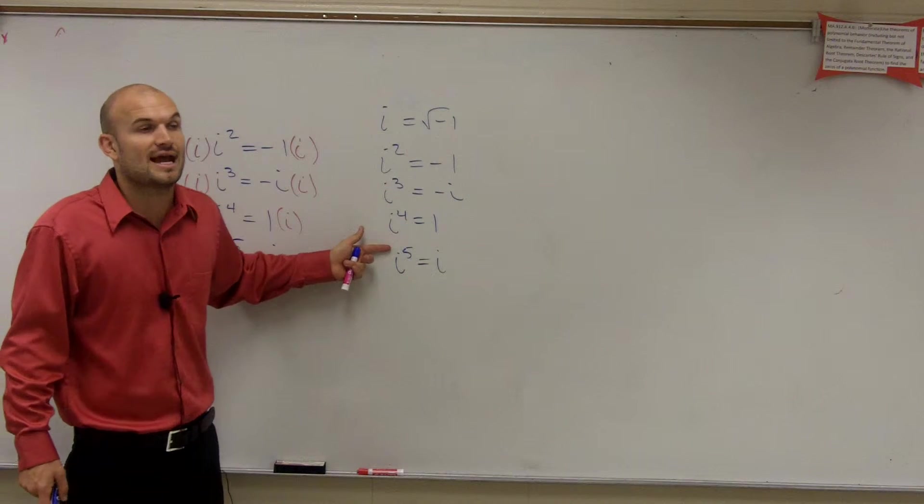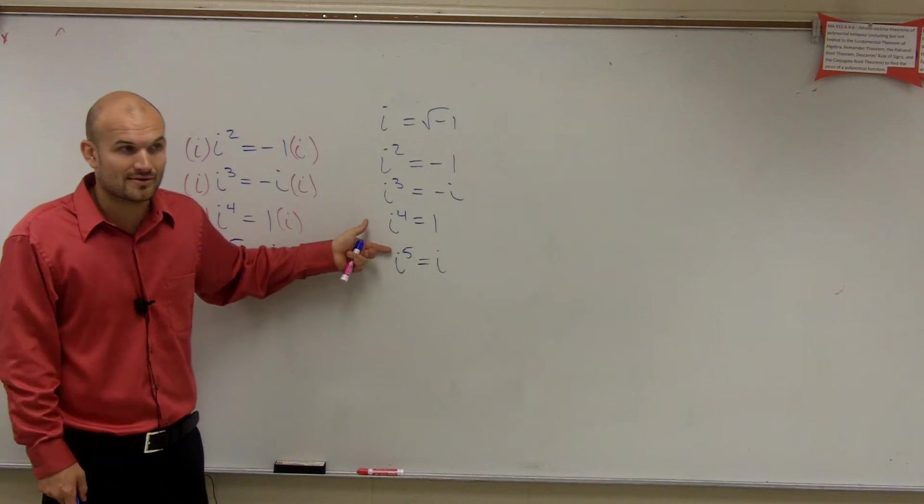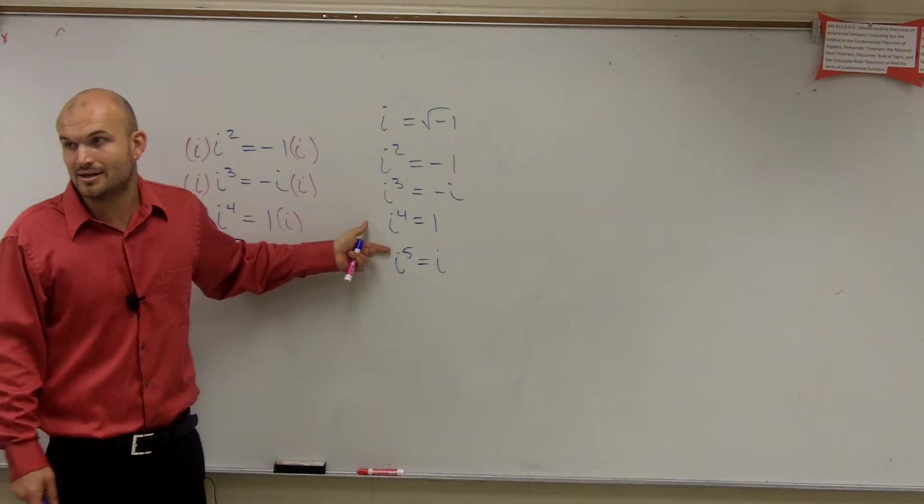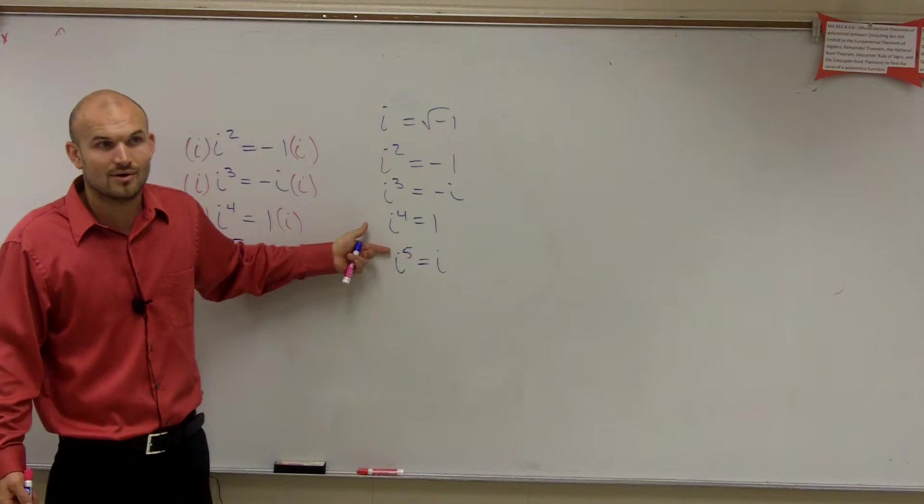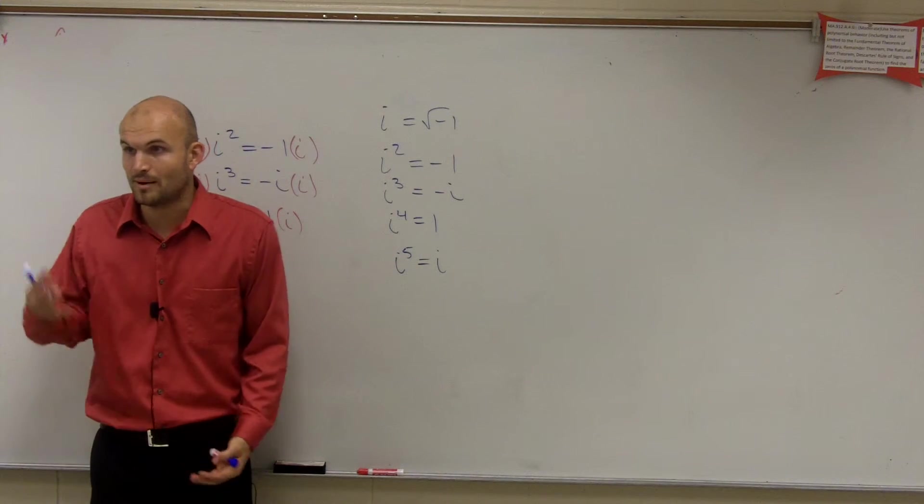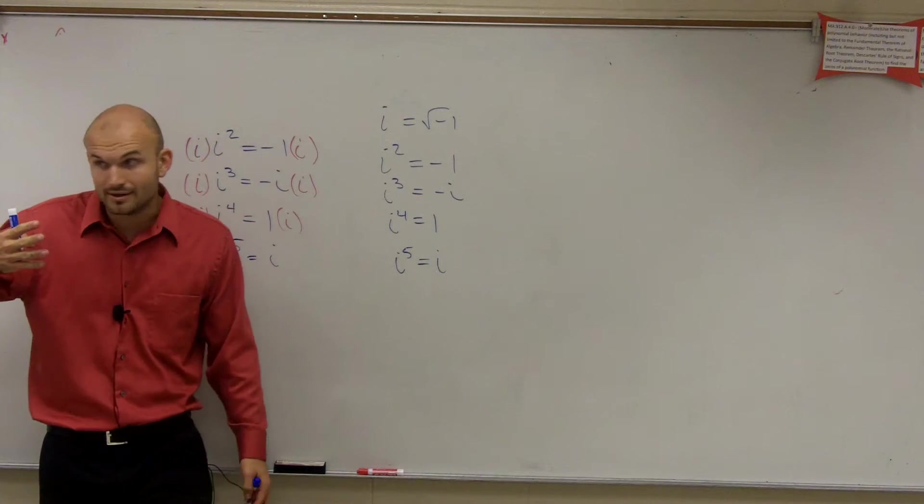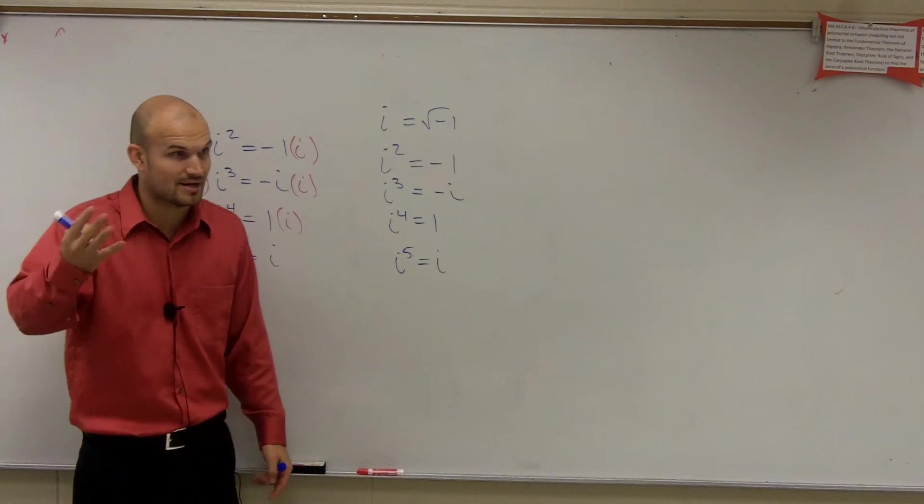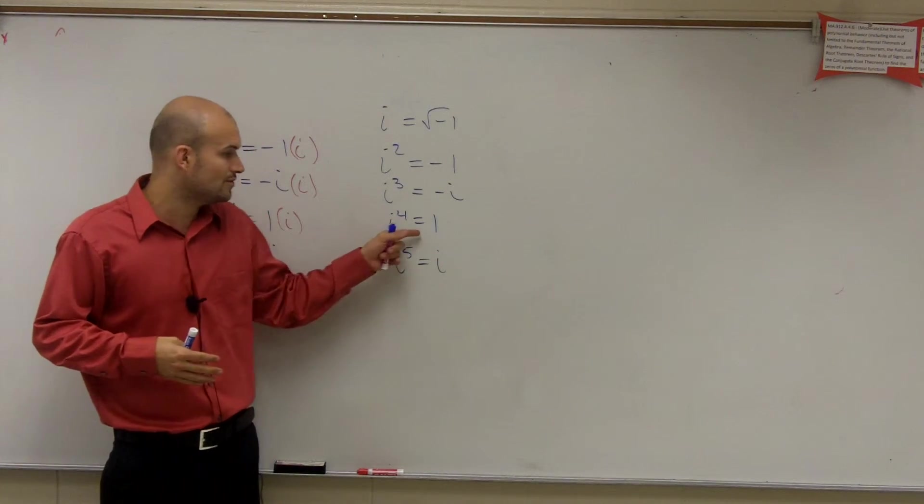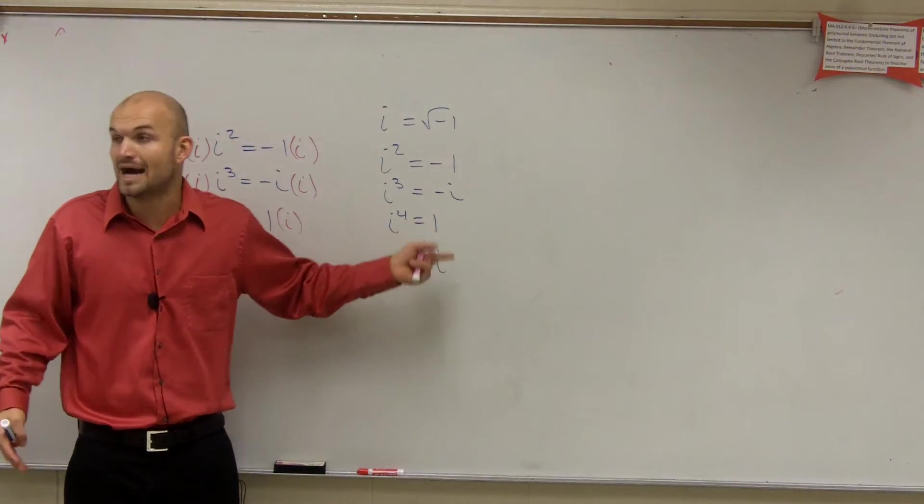Right? So what would you say i to the 16th would be? 1. i to the 20th? 1. i to the 24th? 1. i to the 28th? 1. i to the 32nd? 1. Whenever you have it divisible by 4, it's going to be to the what power? 1. Do you see what I'm talking about there? Do you understand that? If it's divisible by 4, it's equal to 1 or equal to i to the 4th power.